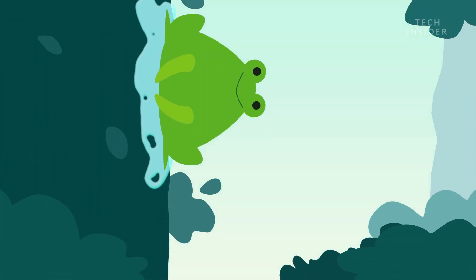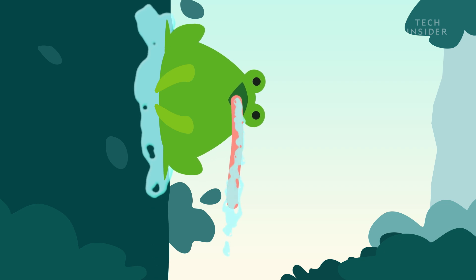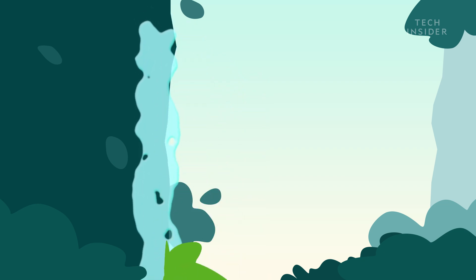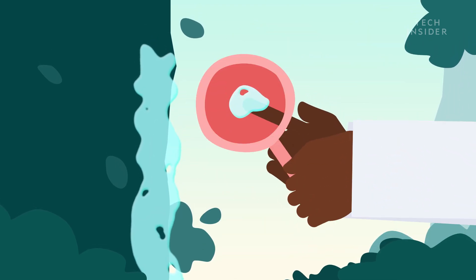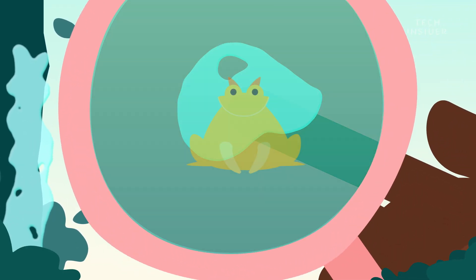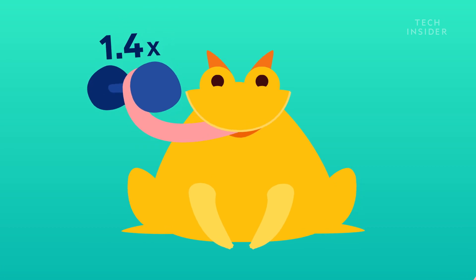That long tongue is covered with thousands of mucus glands, which secretes some of the stickiest spit on Earth. In fact, when researchers studied horned frog saliva in 2014, they found these frogs could lift 1.4 times their own body weight with their sticky tongues.